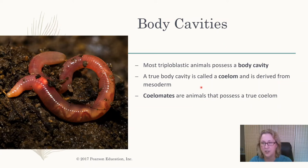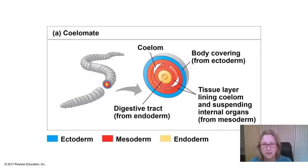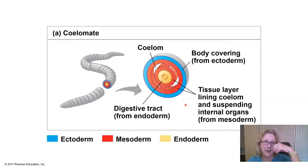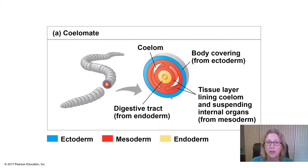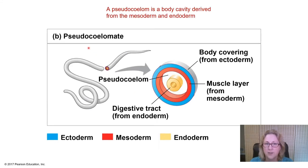Animals with a true coelom, like this earthworm, are called coelomates. Their cavity is lined by mesoderm — it forms either by a pocketing of the mesoderm during early embryonic development or by the mesoderm opening up. This provides an enormous advantage, which is why most bilaterally symmetrical animals are coelomates.